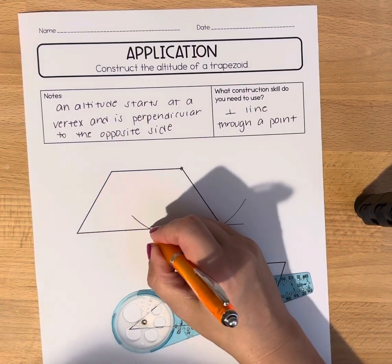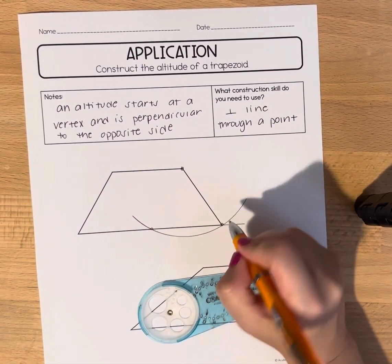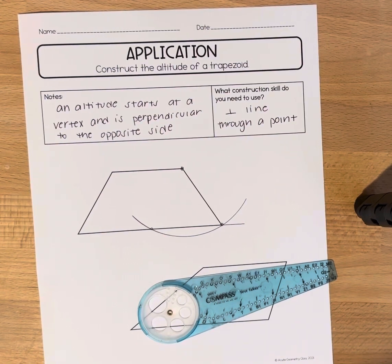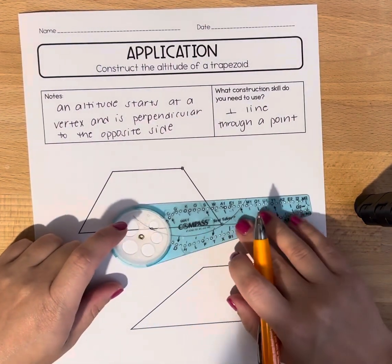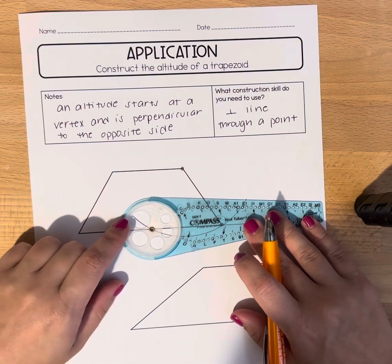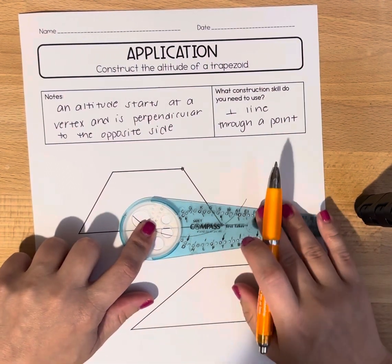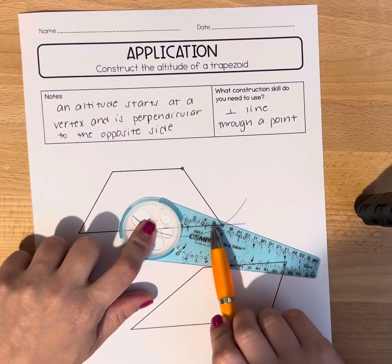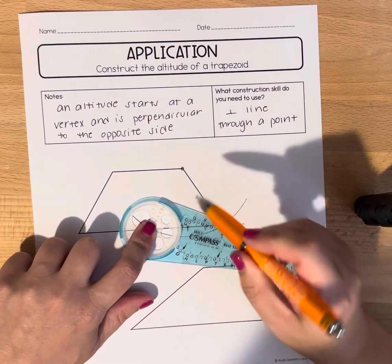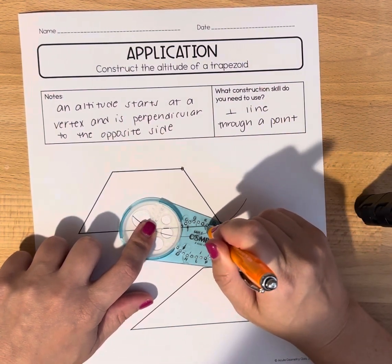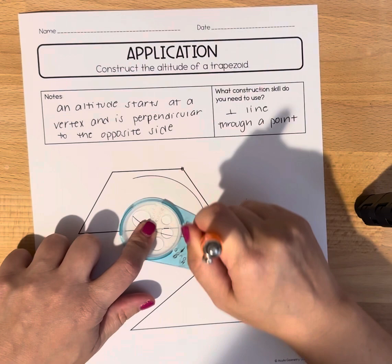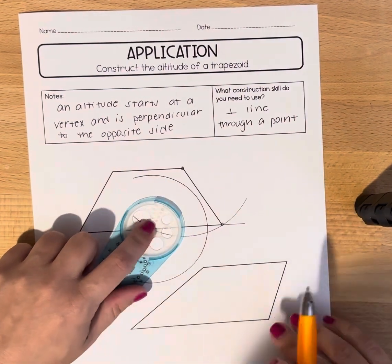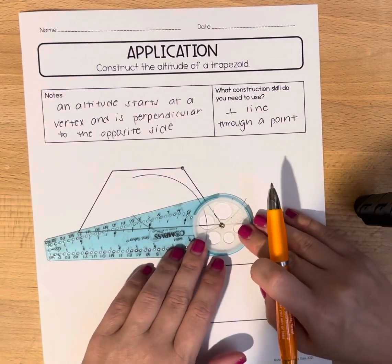Now look at those two intersections and using that we're going to do our perpendicular bisector construction. So I'm going to put the gold ring of my compass on one point. I'm going to find a letter on my compass, a measurement that is close to the other one, and I am going to make an arc. Then I'm going to reverse it.